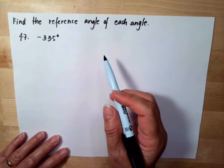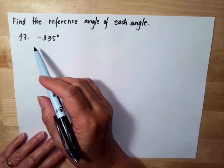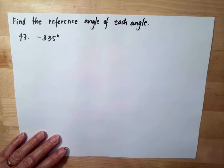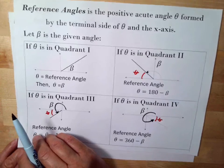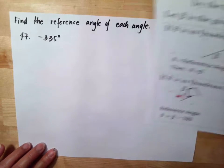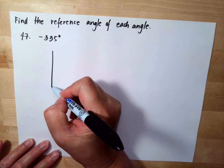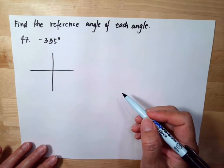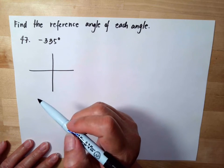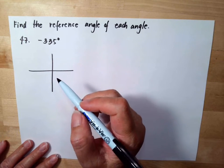Find the reference angle of each angle. We have number 47 is negative 335 degrees. As we studied earlier, these are all positive angles, but we can use that. The only thing is when you draw this, you need to find out what quadrant the negative angle will end. Now if it is a negative angle, we do clockwise to draw our negative angle.